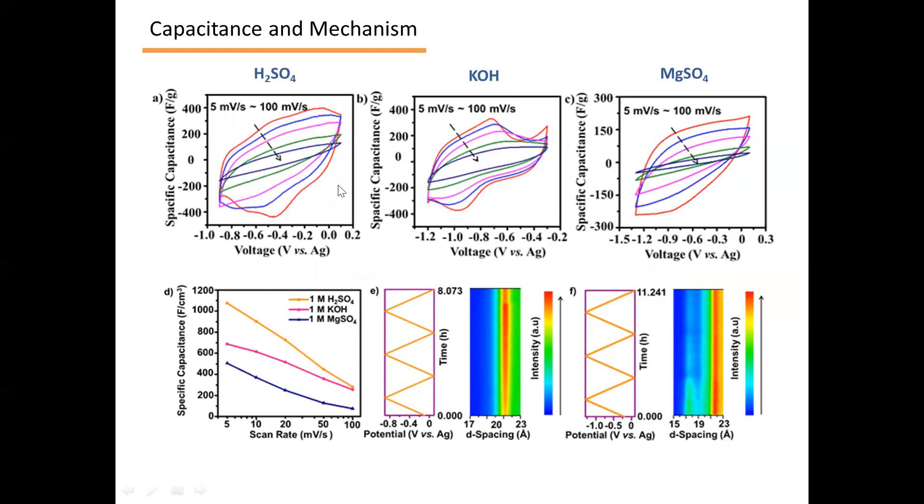When the delaminated niobium carbide free-standing films as supercapacitor electrodes in 1 molar sulfuric acid, 1 molar potassium hydroxide, and 1 molar magnesium sulfate electrolytes, they showed excellent volumetric capacitance of 1075, 687, and 506 farads per cubic centimeter respectively at the scan rate of 5 millivolts per second.